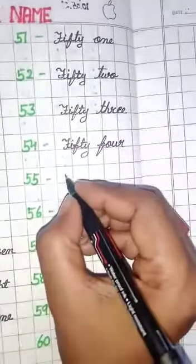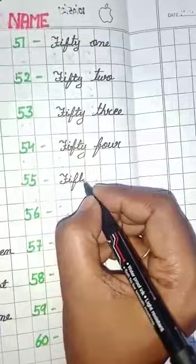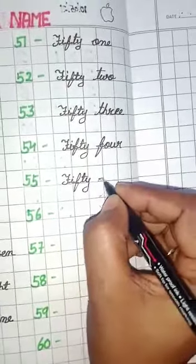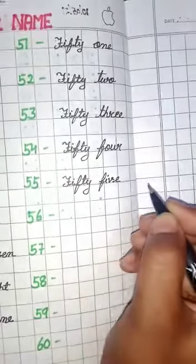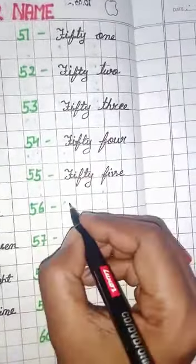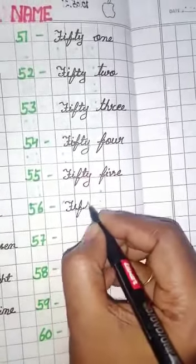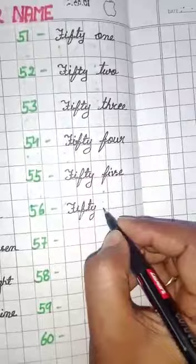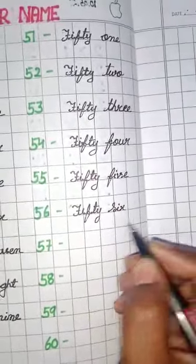55. F-I-F-T-Y, 50, F-I-V-E, 55. 56. F-I-F-T-Y, 50, S-I-X, 6, 56.